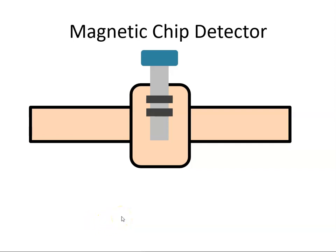So the magnetic chip detector is installed on the scavenged side of the oil system and it is made up basically of a plug that has two magnetic elements in it.